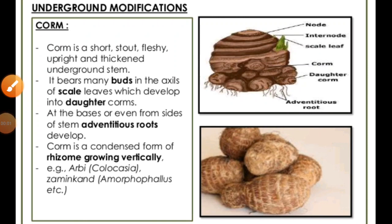The last type of underground modified stem is the corm, which is a short and condensed form of the underground stem. They grow in the vertical direction in the soil and are also capable of storing a large amount of food in them.